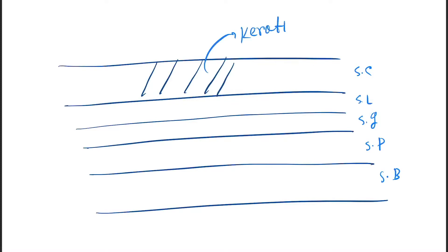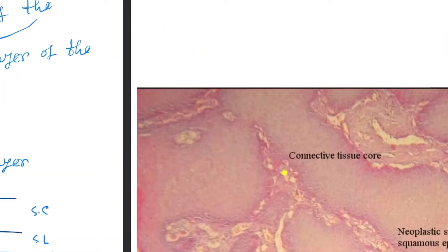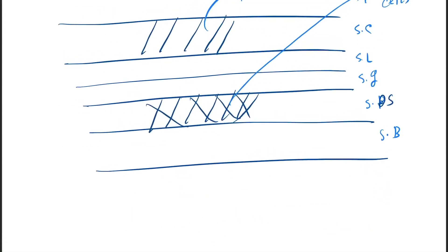The stratum spinosum contains the prickle cells, which form the keratinized tissue. Below that is the stratum basale, which is the basal layer.